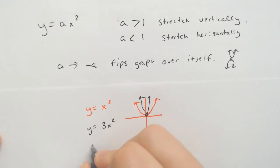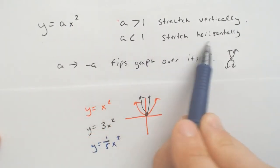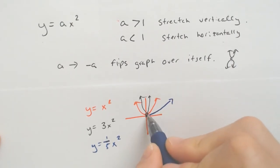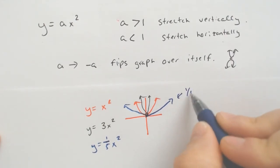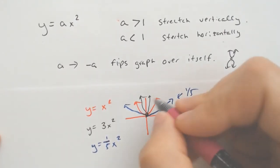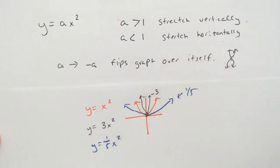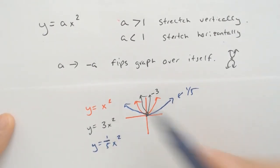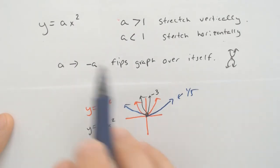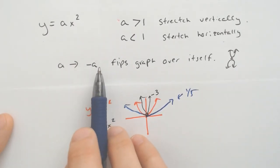And last but not least, what if I wanted to do y equals 1 fifth x squared? That would be if it is less than 1. If it is a fraction, it is stretched horizontally. So it's going to be a little lower. It's going to stretch this away. So the 1 fifth makes it stretch horizontally. The anything bigger than 1 would stretch it vertically and have it reach for the sky. And if it's normal, it would just kind of look more like a normal parabola.